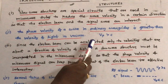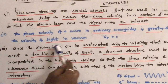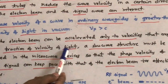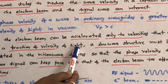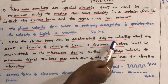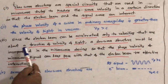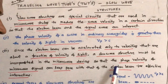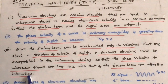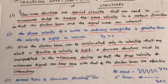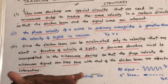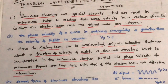Since the electron beam can only be accelerated to velocities that are about a fraction of the velocity of light, a slow wave structure must be incorporated in microwave tubes so that the phase velocity of the microwave signal can keep pace with that of the electron beam for effective interaction. This is a very important point. With the help of slow wave structures, the phase velocity of the microwave signal is reduced such that it will keep phase with that of the electron beam, so that the energy of the electron beam is transferred to the RF signal.